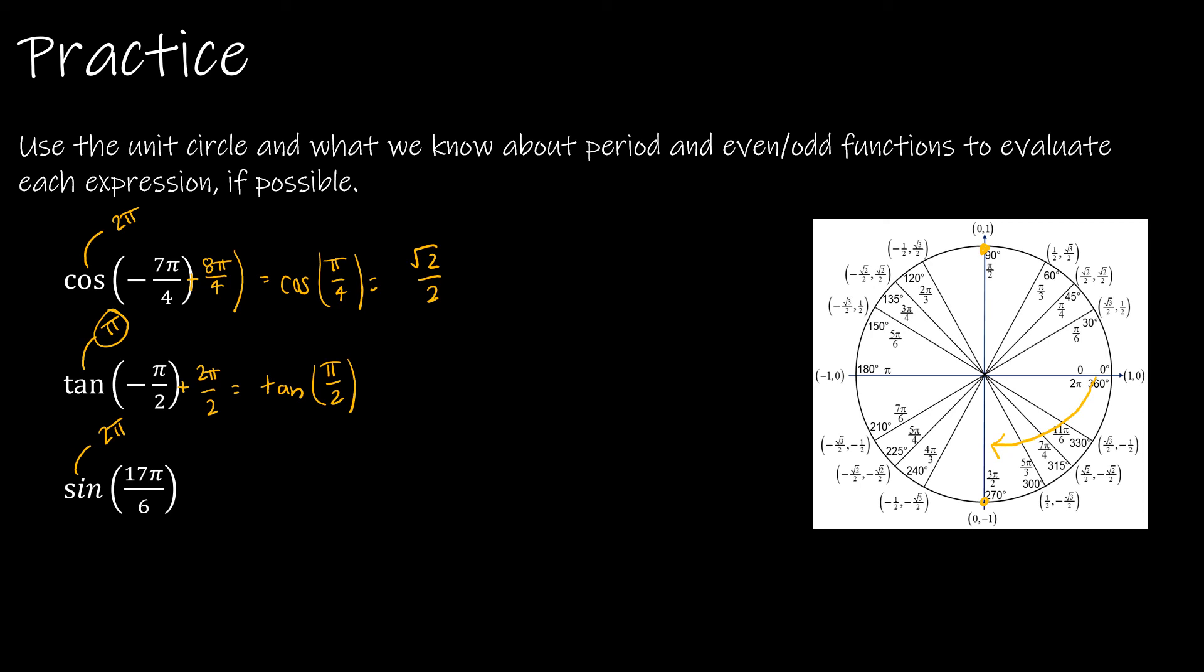But what do I know about tangent either up here of π/2 or down here of -π/2? Either way, remember, tangent is sine over cosine, which means it's really the y value over the x value. So this would be 1 over 0, and this would be -1 over 0, which is still undefined either way.